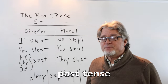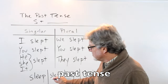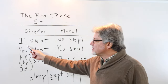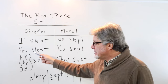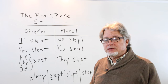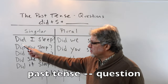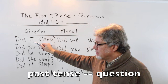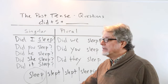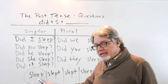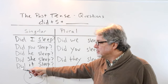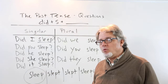Here is the verb sleep in the simple past tense. The past tense form is slept. I slept. You slept. He, she, it slept. When you make a question in the simple past, use the helping verb did, then the subject, then the main verb in its simple form — it doesn't matter what the subject is. You always use did and the simple form of the verb.